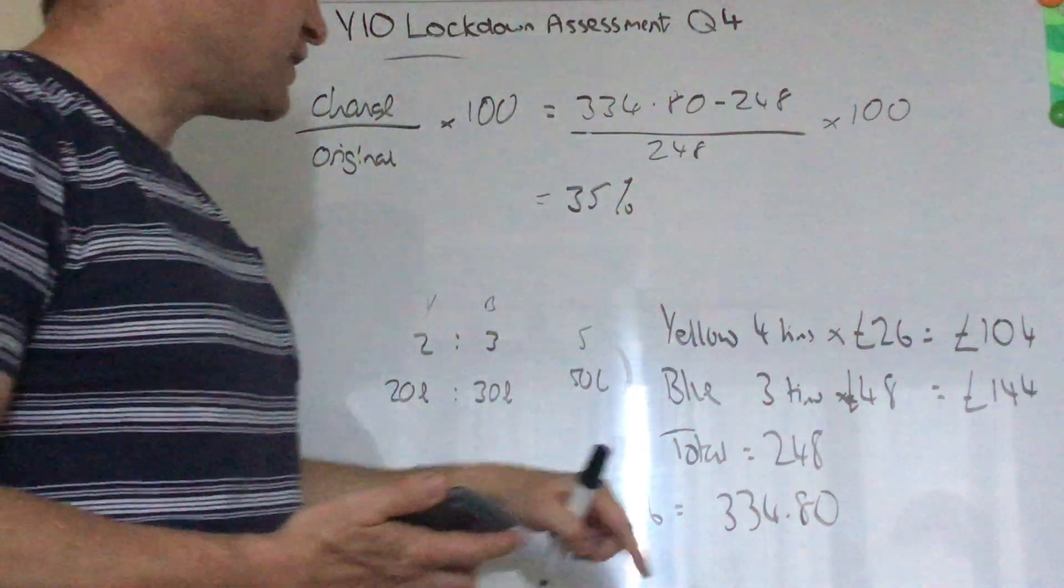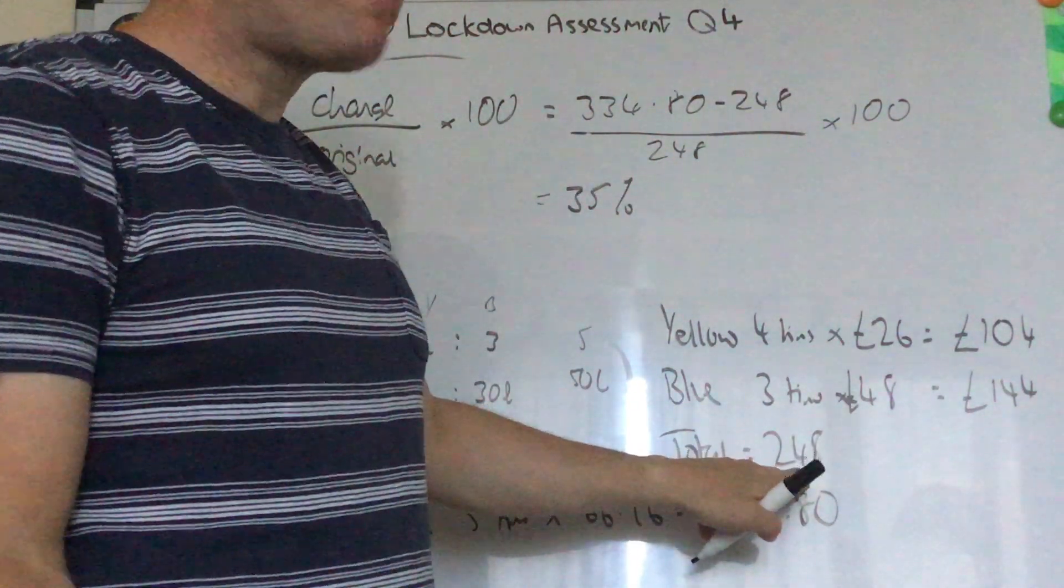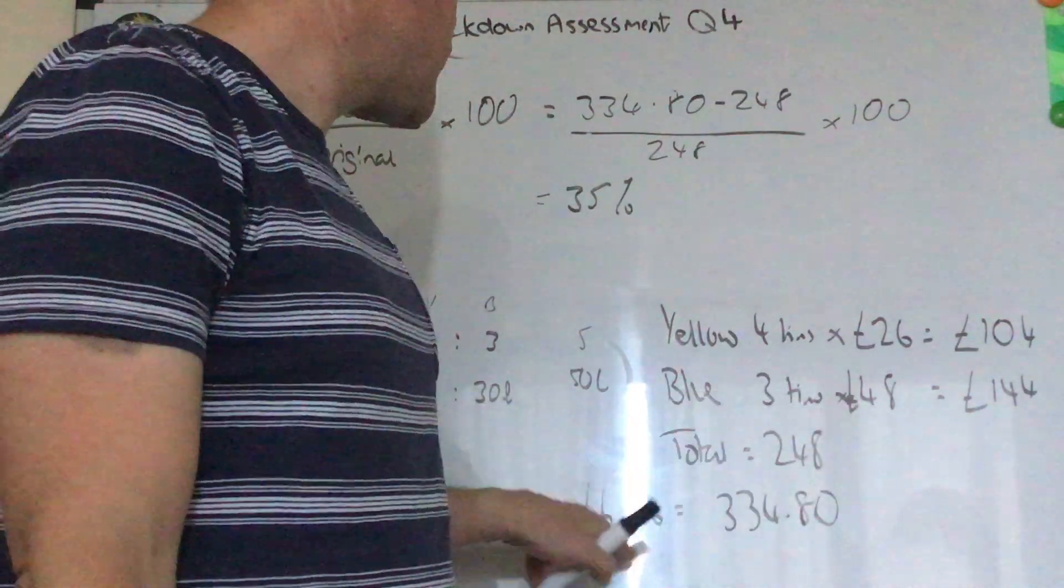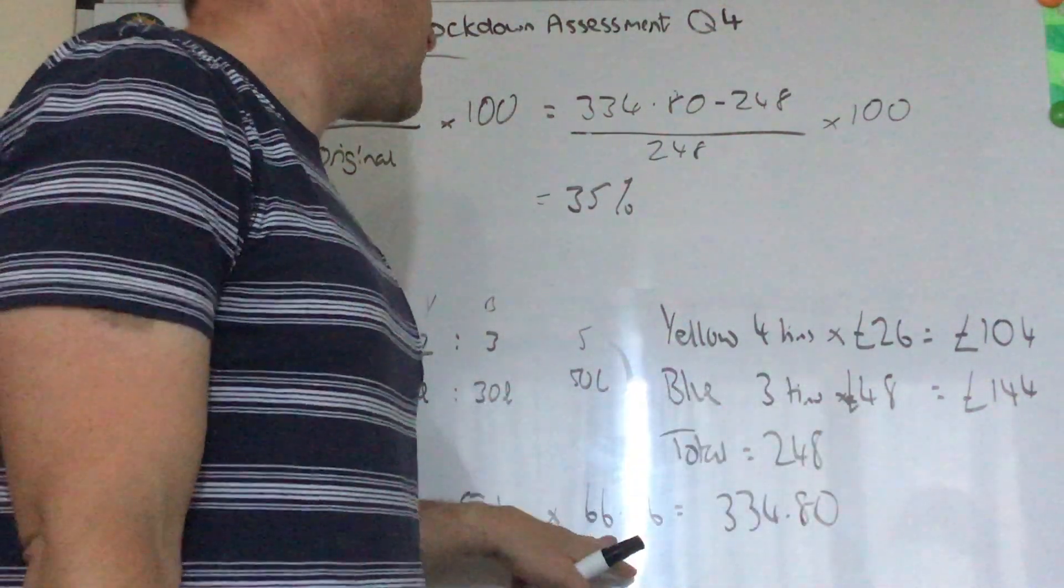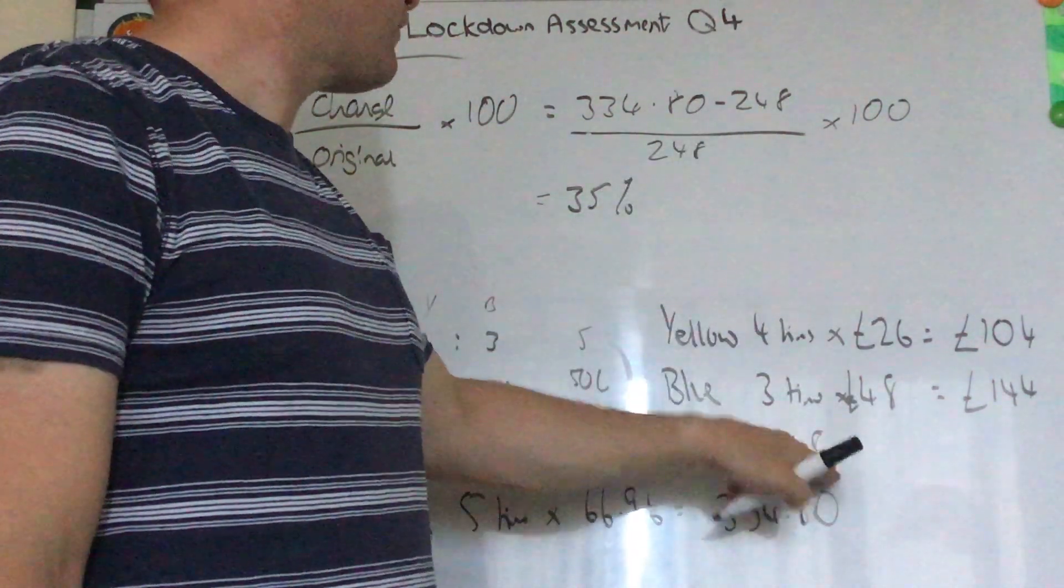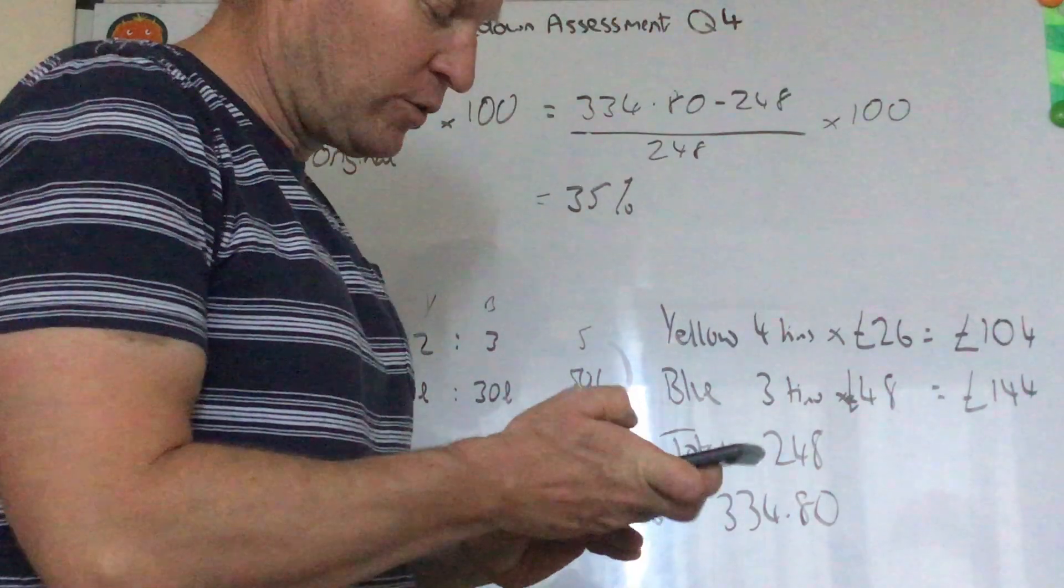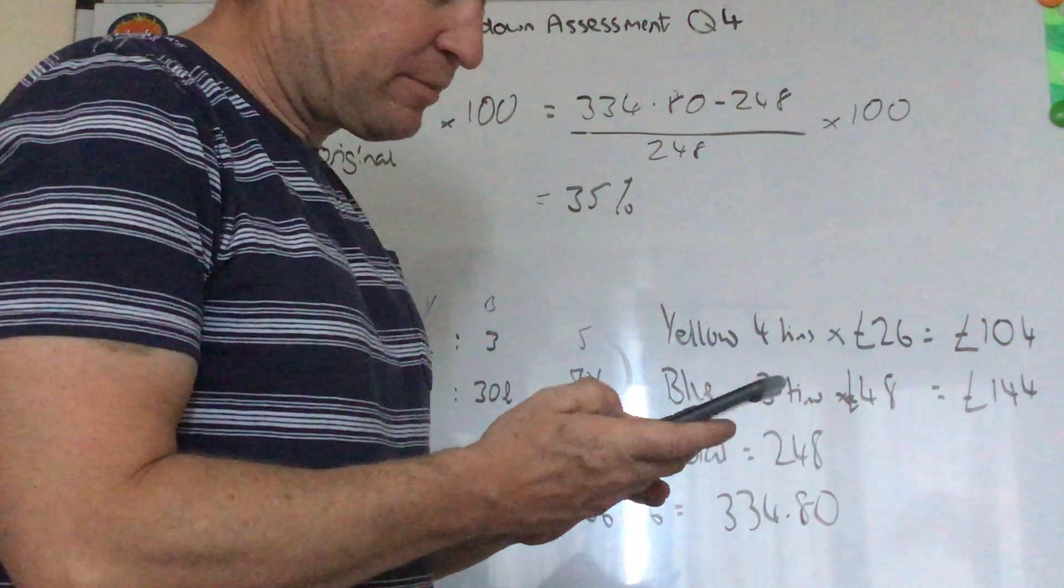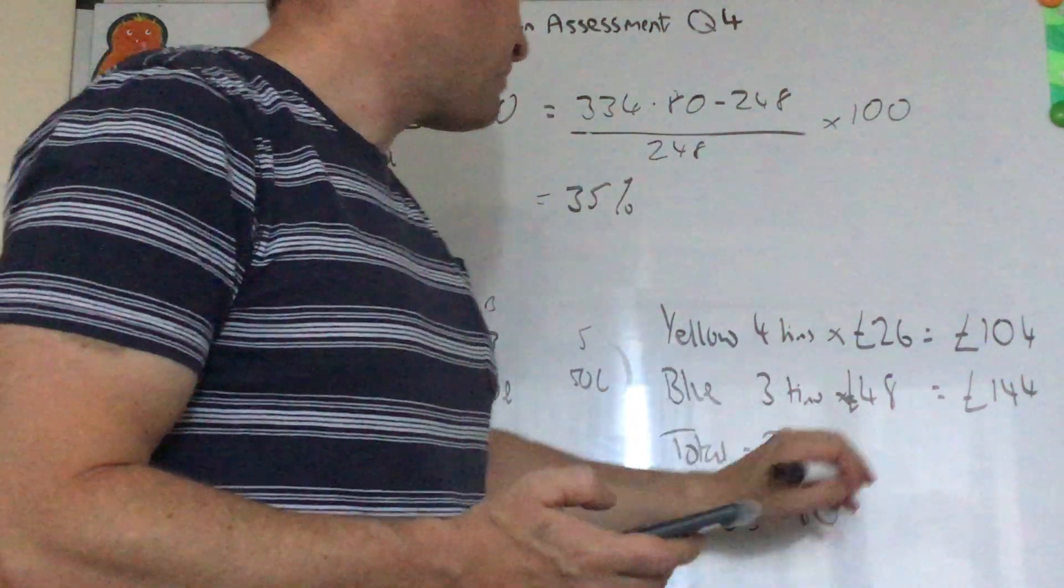If you wanted you could divide that by 5 to work out the total cost per tin to him. I've done £66.96 minus whatever that was and then over whatever that was times 100. I'll just do that for you quickly. So £248 divided by 5 is £49.60. That's how much it costs him to make one tin.